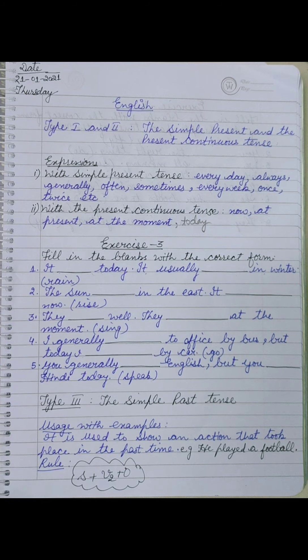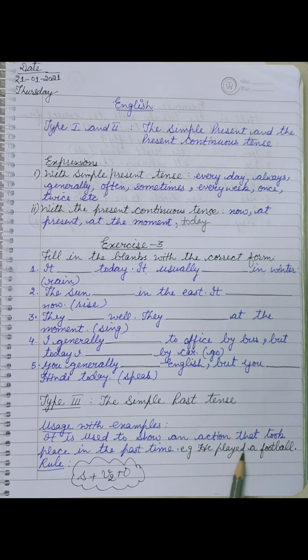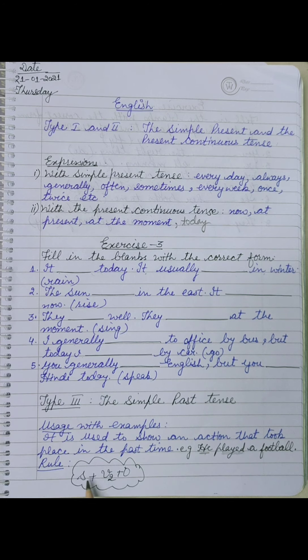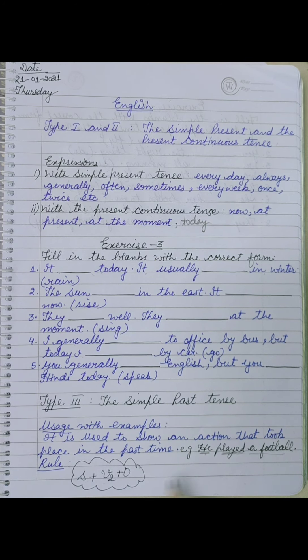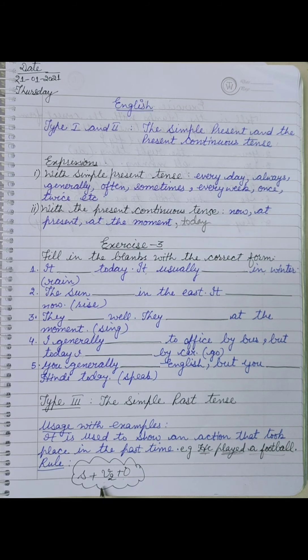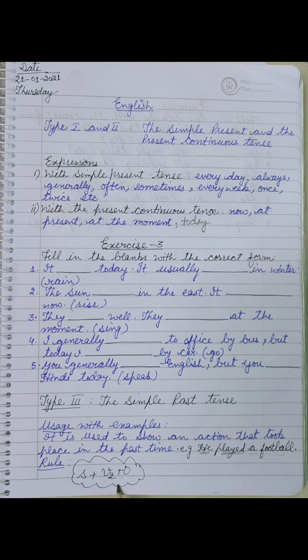Right, जो पहले हुआ था - he played a football. Play की second form played. तो इसका rule क्या है: subject plus V2, verb की second form plus object. Subject plus V2 plus object is the rule of simple past tense.